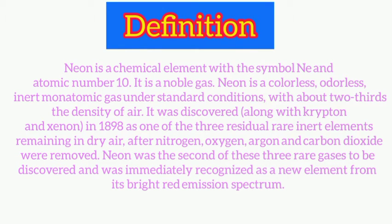Hello everyone, welcome to my channel. In today's video we will learn about the definition, properties, and uses of Neon element. So let's start with its definition. Neon is a chemical element with the symbol Ne and atomic number 10.